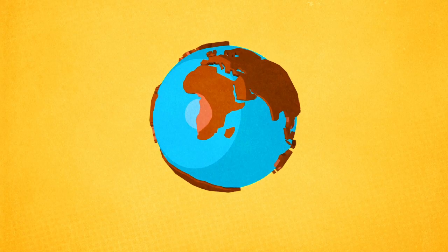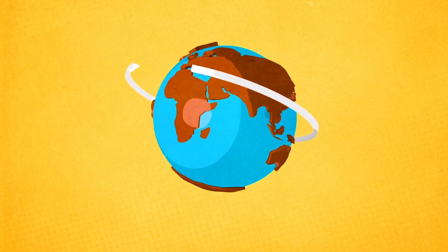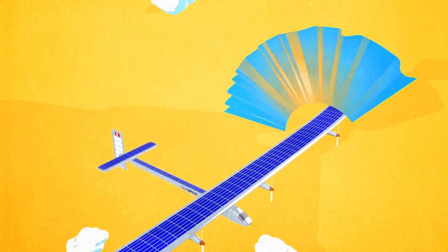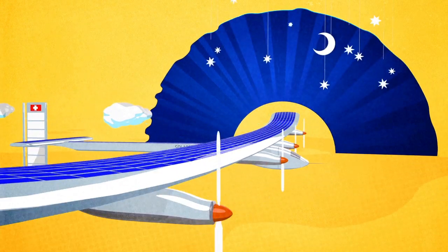A solar-powered plane is due to fly around the world in 2015 without using a drop of fuel. Solar Impulse 2, the successor to its prototype counterpart, will travel stages of up to five days and nights non-stop on its journey.